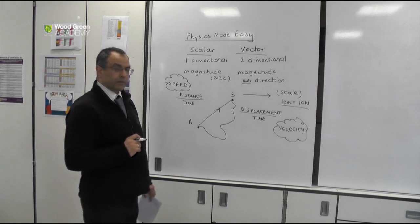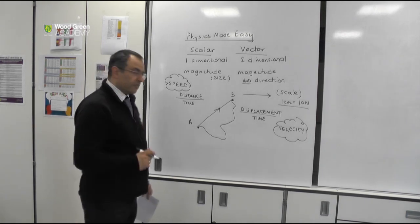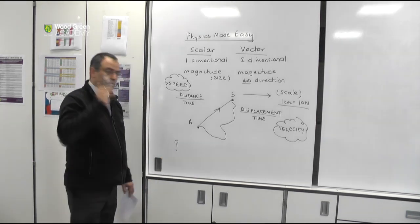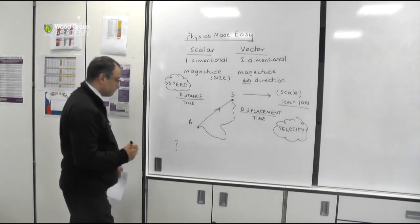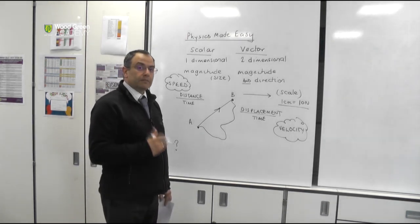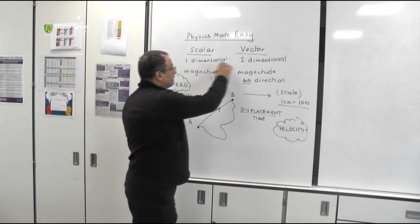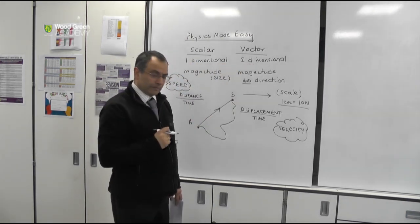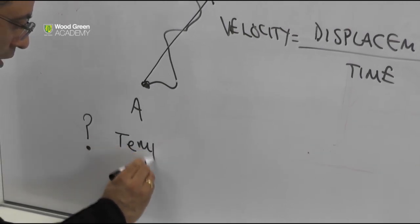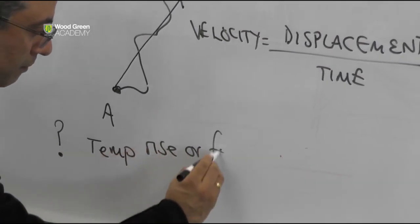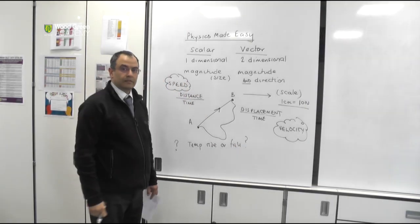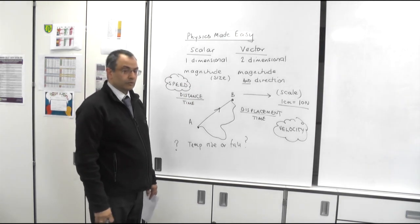I'd just like to finish with one thinking question which will force your grey matter to be challenged. Are there any quantities in physics or science that may be scalar, or vector, or both? For example, temperature rise or fall. Scalar? Vector? Or both?